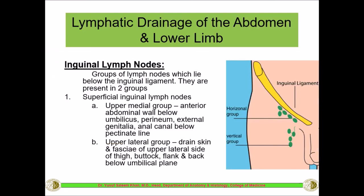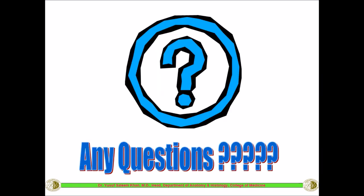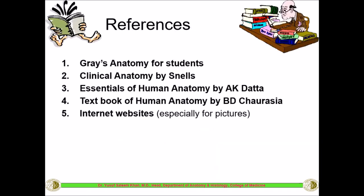Finally, regarding lymphatic drainage: the lower part of the abdomen, especially below the umbilicus, drains into the superficial inguinal group of lymph nodes. These are arranged in vertical and horizontal groups — the horizontal group further divided into upper medial and upper lateral groups. This is where lymphatic drainage of the lower anterior abdominal wall and the lower limbs occurs. This concludes the topic of the anterior abdominal wall and inguinal hernias. References are mainly from Gray's Anatomy and other textbooks as well as internet images.